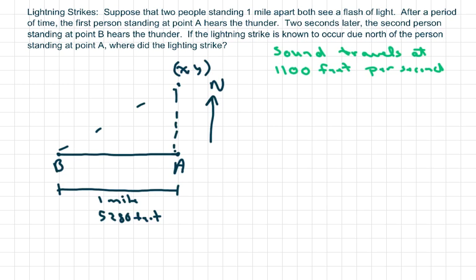After a period of time, the first person standing at point A hears the thunder. Two seconds later, the second person standing at point B hears the thunder. If the lightning strike is known to occur due north of the person standing at point A, where did the lightning strike?